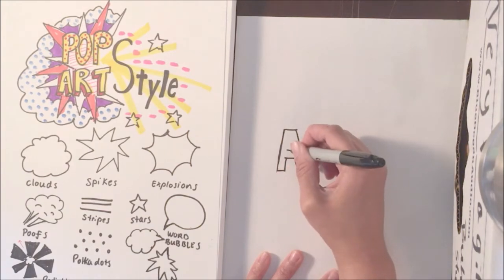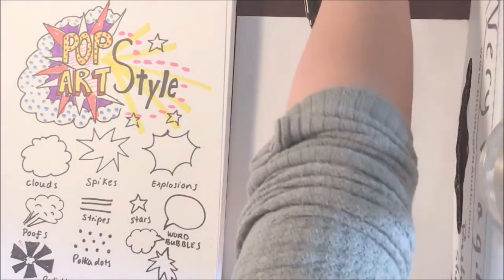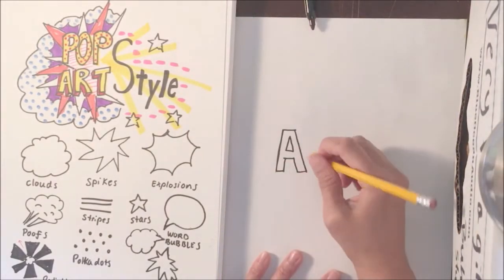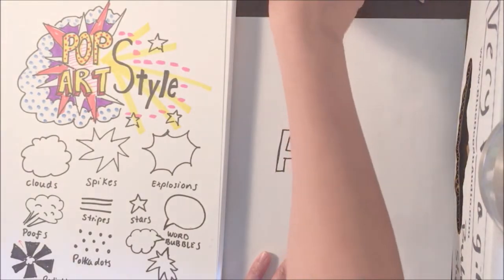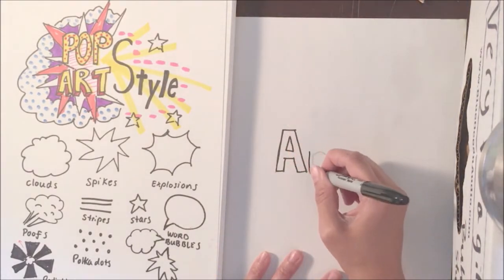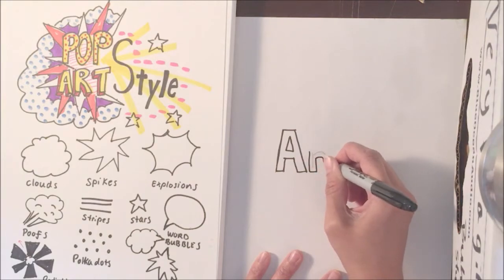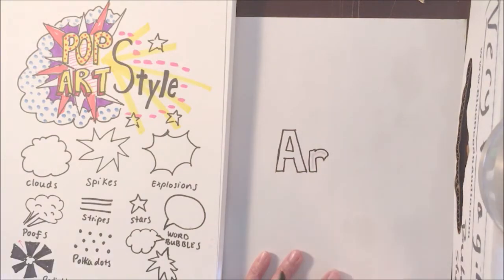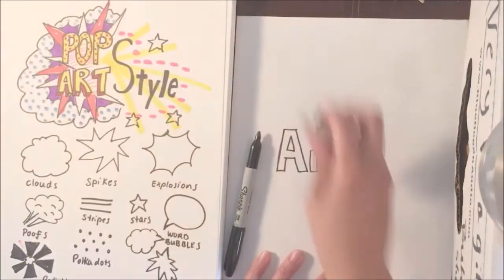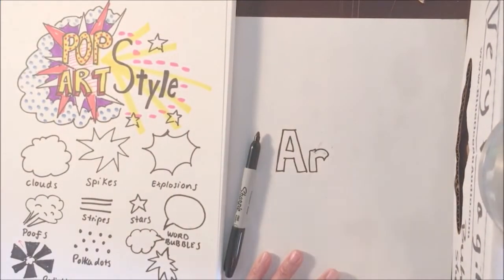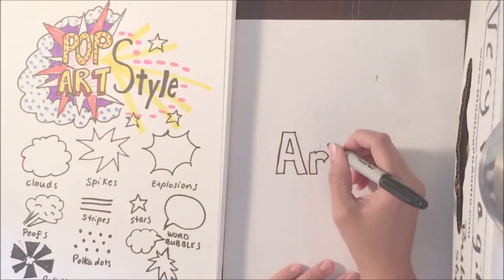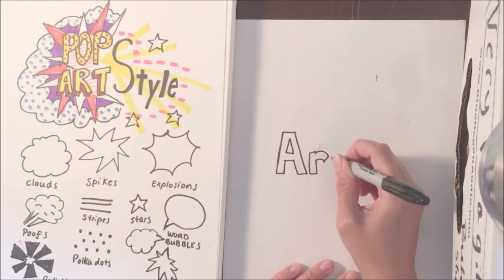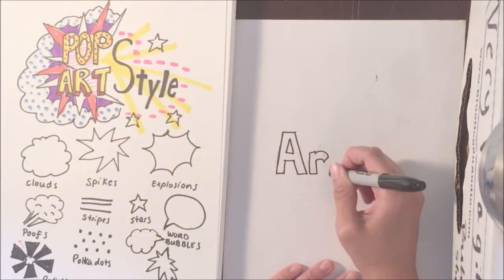One way to do block letters is to first do the normal letter and then do a bubble or a block around it. So I'll do the letter with pencil for my R and then kind of give it an outline by hovering around it. That's one way you could do block letters. A-R and then...